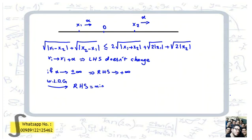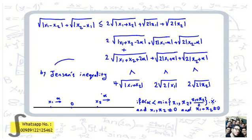With that alpha chosen, x1 and x2 are at the minimum of the right hand side. Now if x1 plus x2 is not zero, and both x1 and x2 are not zero, we can choose alpha strictly between zero and the minimum of x1, x2, and (x1 plus x2) over two. With this choice, these terms all have the same sign, and we can apply Jensen's inequality.